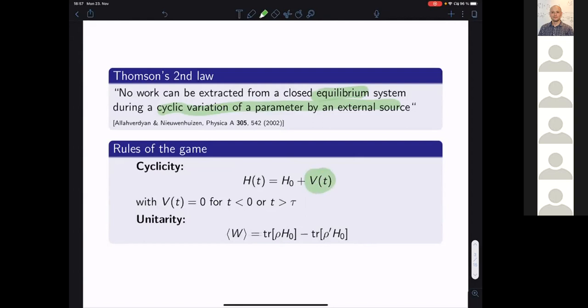Of course, this here refers to the equilibrium system, and we are interested in particular in a non-equilibrium state and how much work we can extract from this. But we can take this as a basic and keep the second part here, which is the cyclic variation of a parameter by an external source. So more concretely, what we will allow is a cyclic variation of a Hamiltonian, so the external source is the external driving, which is in this part.